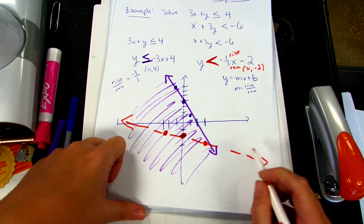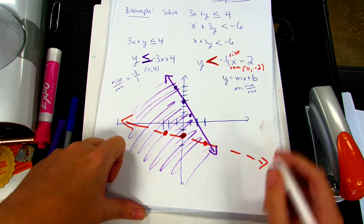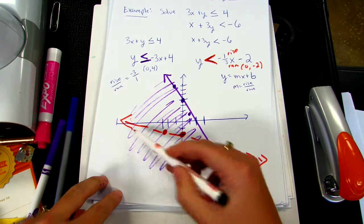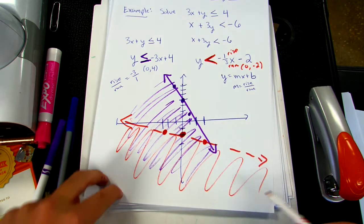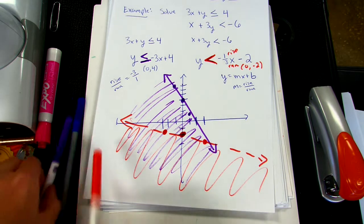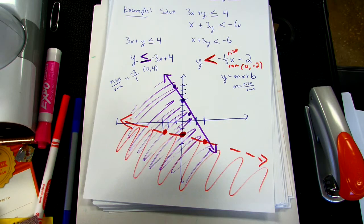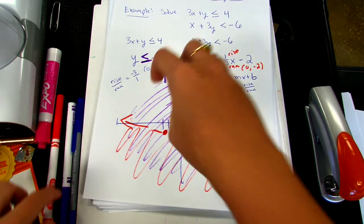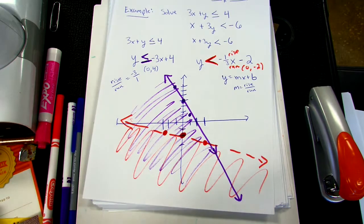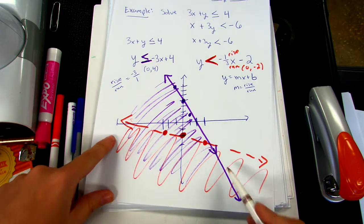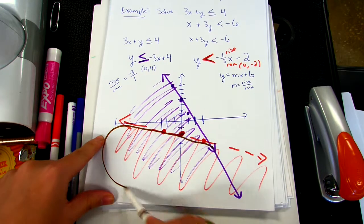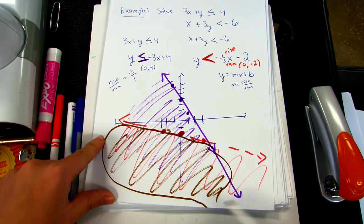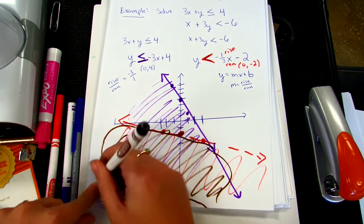We need to decide: do we shade below or above this line? Since it's less than, we shade below. Our answer is where the two shaded regions intersect. Purple and red intersect in this portion right here — the mix of purple and red is our solution.